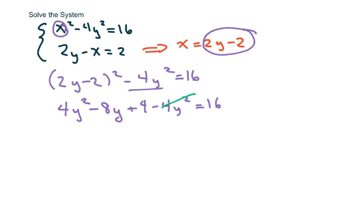These two cancel. I'm going to go ahead and subtract the 4. You get negative 8y equals 12. So y equals negative 3 halves.